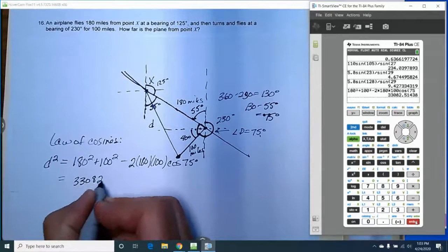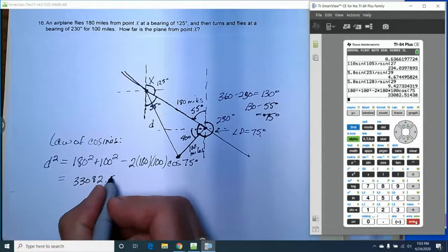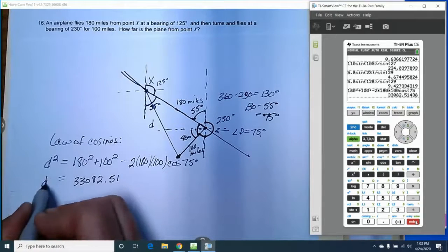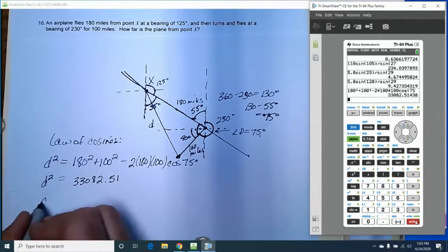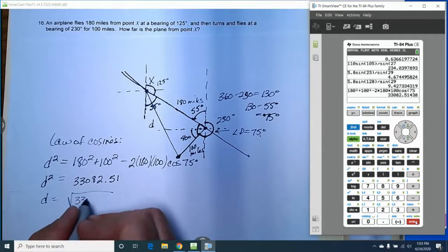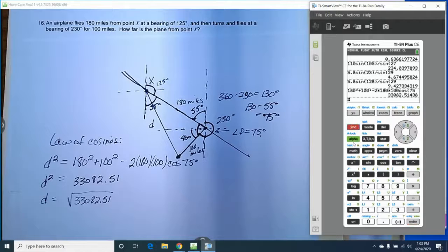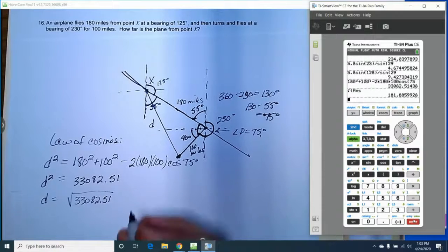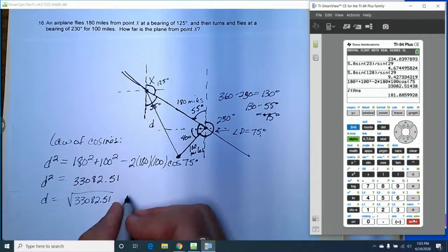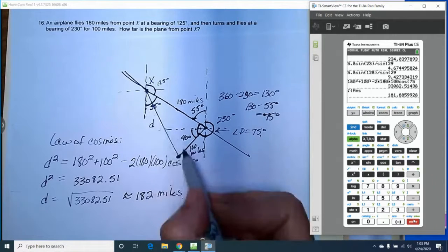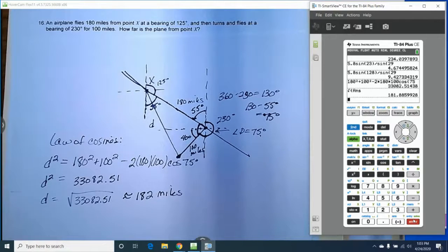Working that out, I get 33,082.51. What I really want is D, so I'm going to take the square root to get D. So that distance turns out to be 182 miles.